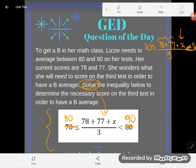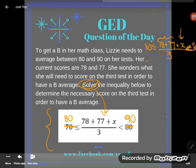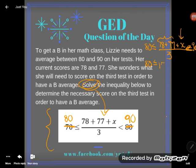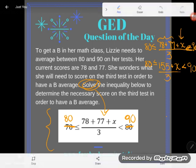I'm going to do that, and so what will I have now? I'll now have 80 is less than or equal to, when I added 78 plus 77, I got 155. That 155 is still adding an X, and still the whole thing is being divided by 3. I haven't dealt with that yet, and that whole thing is less than 90.